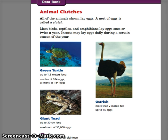Most birds, reptiles, and amphibians lay eggs once or twice a year. Insects may lay eggs daily during a certain season of the year. There are three animals on this page: the green turtle, the ostrich, and the giant toad.